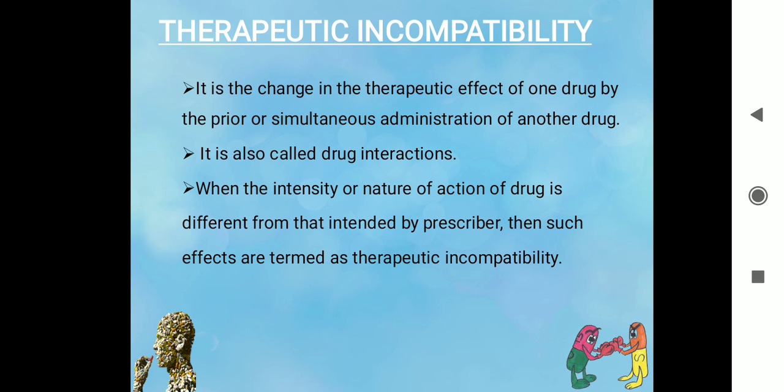What is therapeutic incompatibility? It is the change in the therapeutic effect of one drug by either prior or simultaneous administration of another drug. When the intensity or nature of action of a drug is different from that intended by the prescriber, such effects are called therapeutic incompatibility. For example, if a physician wants to cure elevated body temperature but a side effect is also observed, that is therapeutic incompatibility due to simultaneous administration of two drugs together.